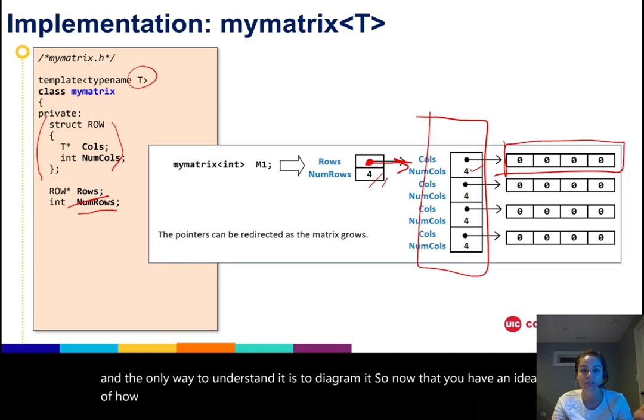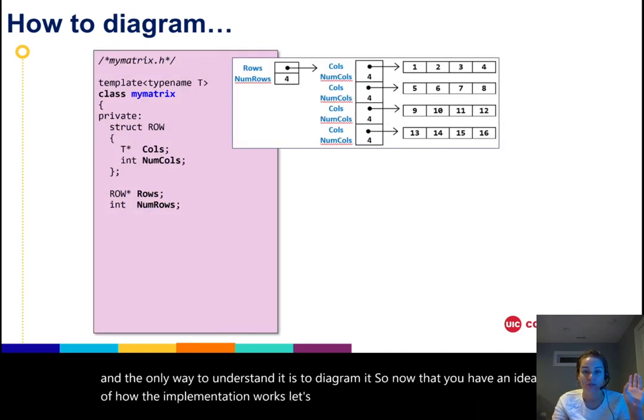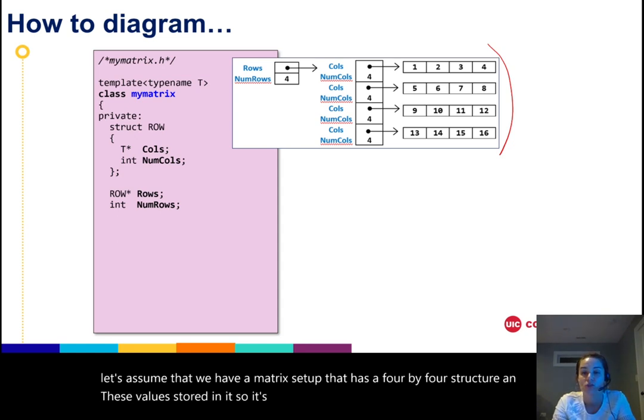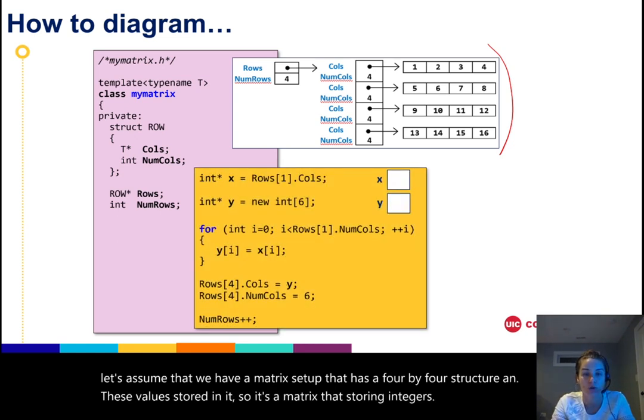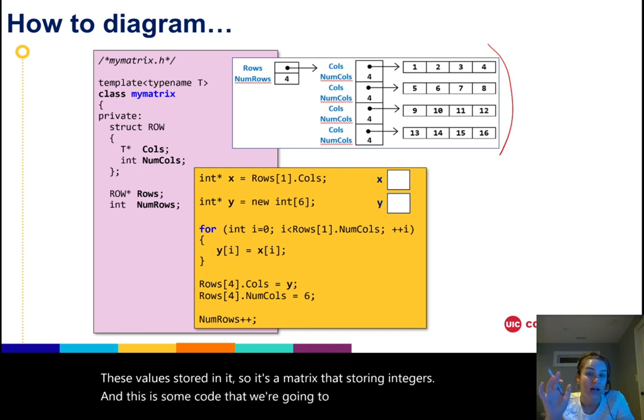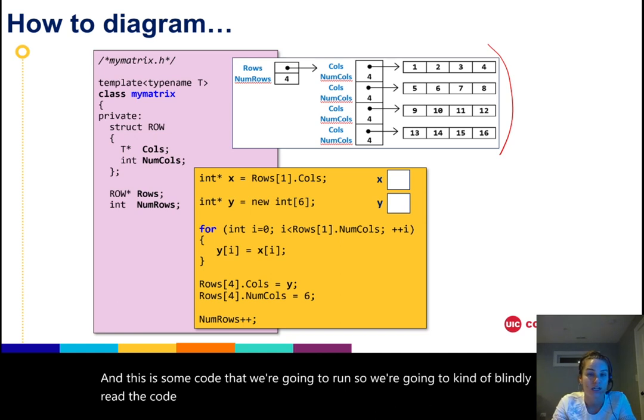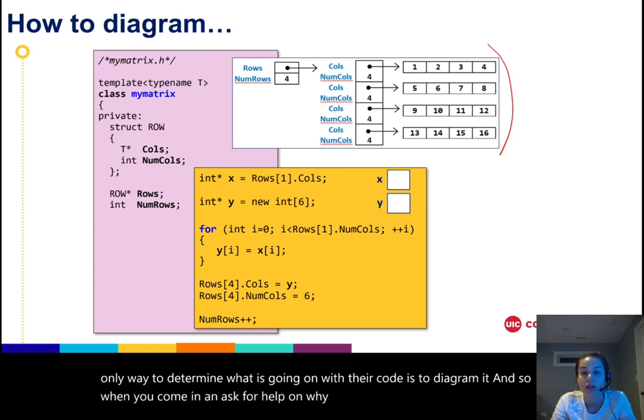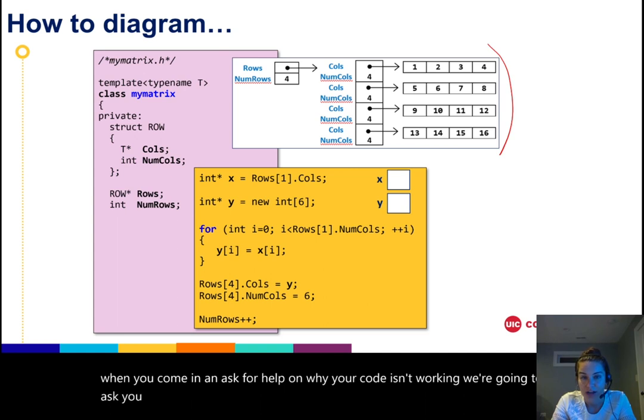Now that you have an idea of how the implementation works, let's go and actually diagram some code. Let's assume that we have a matrix set up that has a 4x4 structure and these values stored in it. So it's a matrix that's storing integers, and this is some code that we're going to run. We're going to kind of blindly read the code and diagram it to see what it does. When students have bugs, the only way to determine what is going on with their code is to diagram it. So when you come in and ask for help on why your code isn't working, we're going to ask you to show us your diagram.